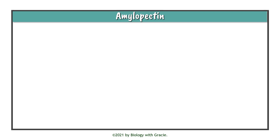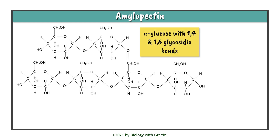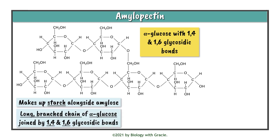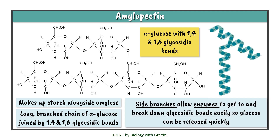Next we have amylopectin. This is made of alpha glucose molecules with 1,4 and 1,6 glycosidic bonds, making up starch alongside amylose. It is a long branched chain of alpha glucose. Its side branches allow enzymes to access and break down the glycosidic bonds easily and quickly, meaning glucose — and essentially energy — can be released rapidly.